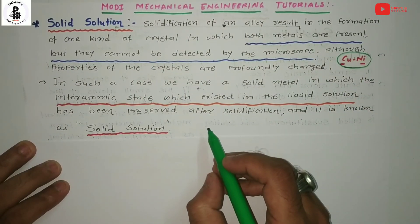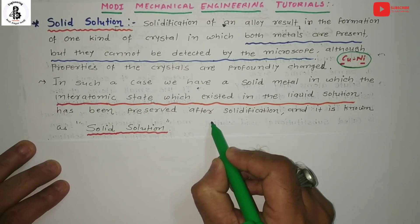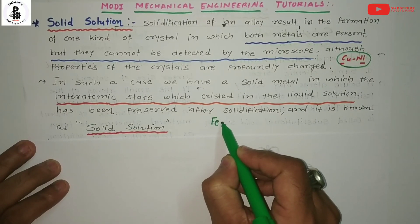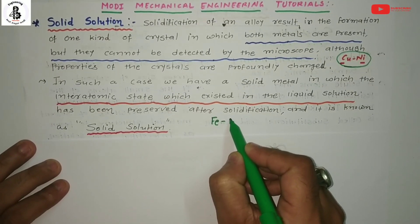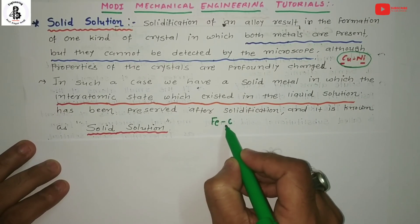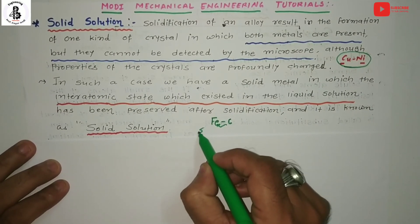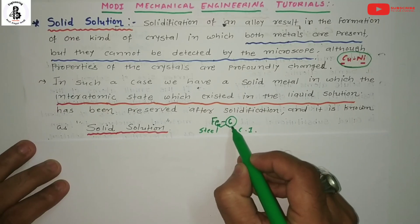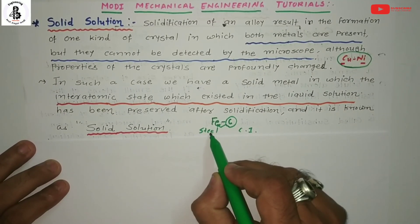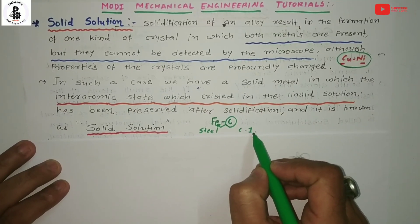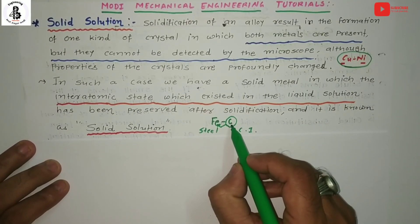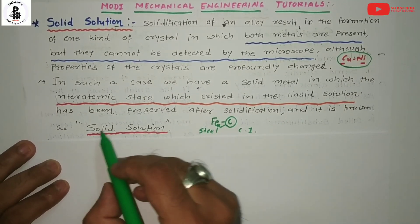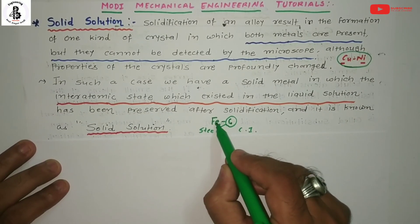One more example: carbon is added into iron to form steel or cast iron. For the iron-carbon diagram, carbon is added into iron to form steel or cast iron depending on the weight percentage of carbon. So carbon mixed with iron forms a new material, and that new material is called a solid solution of carbon and iron.